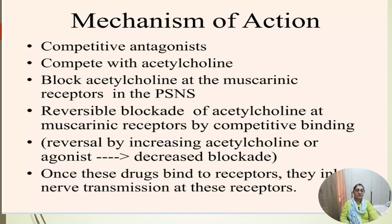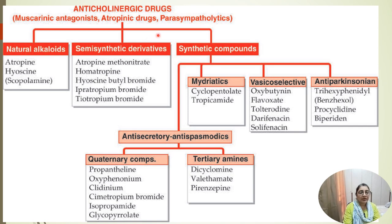The classification of anti-cholinergic drugs has various names: muscarinic antagonist, atropinic drugs, and parasympatholytic drugs — these are all synonyms for anti-cholinergic drugs. Classification includes natural alkaloids, semi-synthetic derivatives, and synthetic compounds.